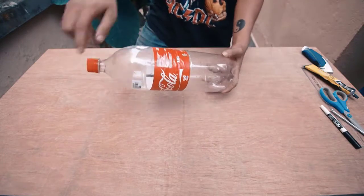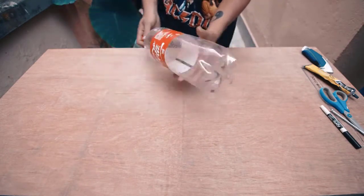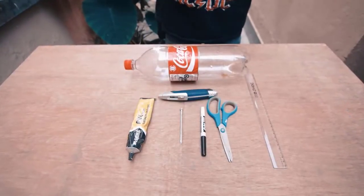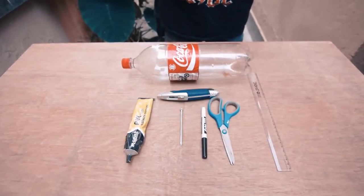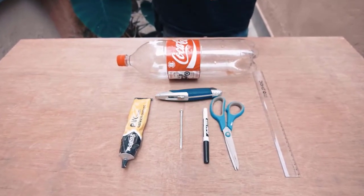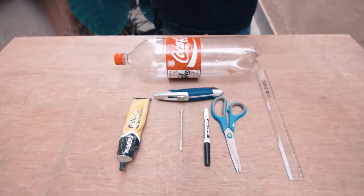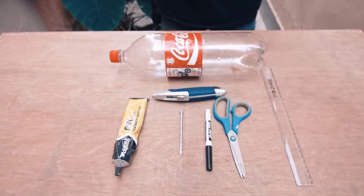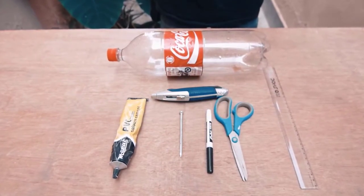To build an S4W rain gauge you need a soda bottle in good condition with perfectly cylindrical walls, no curvature in them. You also need a ruler or scale that's at least 200 millimeters long, scissors, knife, 5 millimeter diameter nail roughly, marker, and PVC glue.